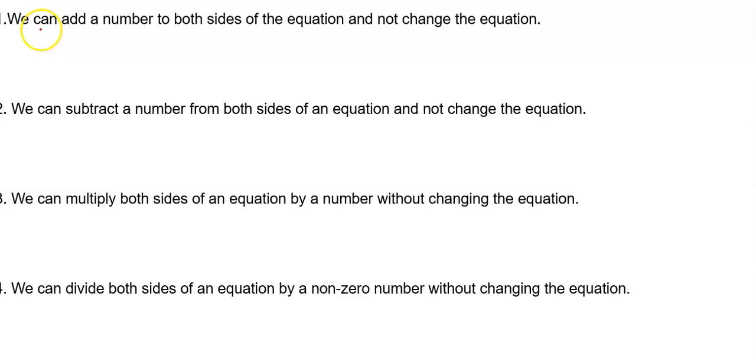The first property says we can add a number, any number, to both sides of the equation. So it's very important that we add it to both sides and not change the equation. We can subtract a number from both sides. We can multiply both sides by a number. And we can divide both sides by a number.